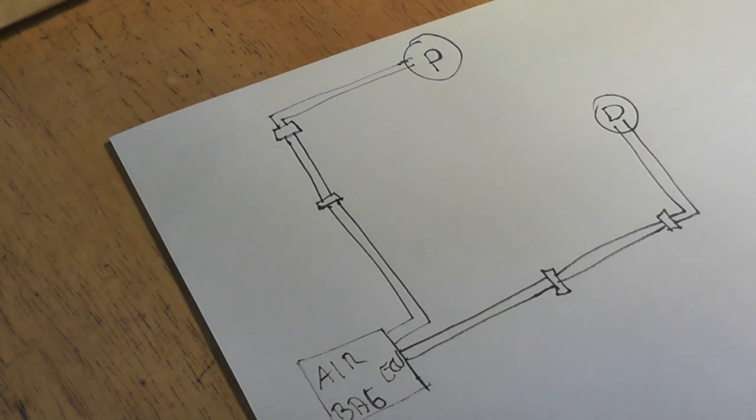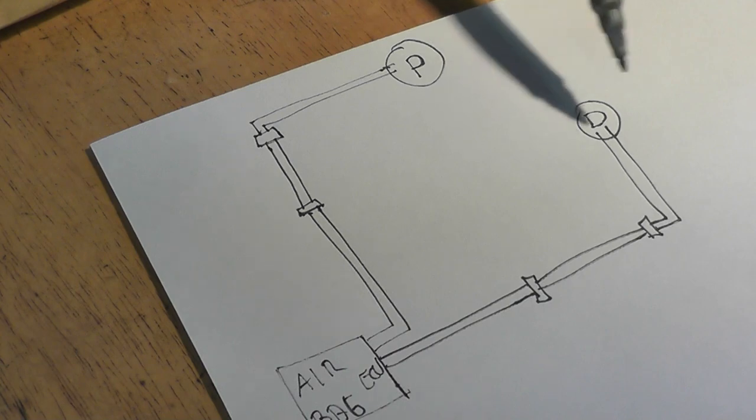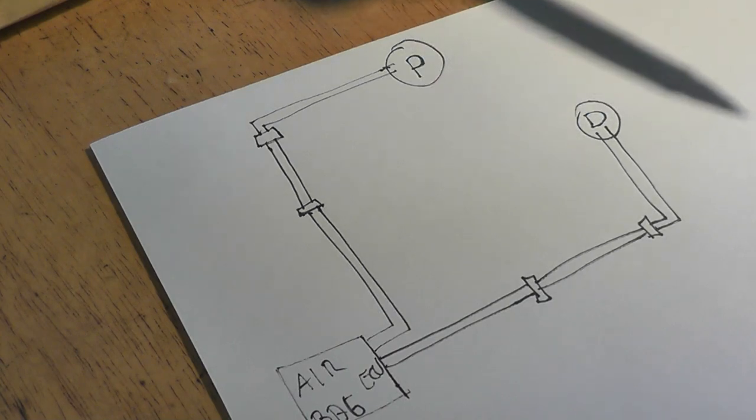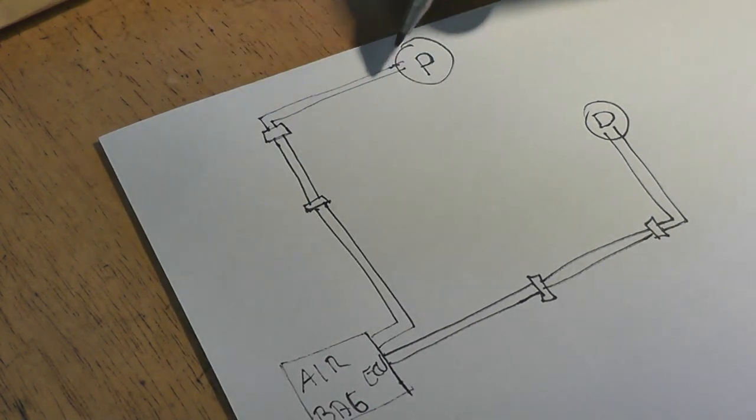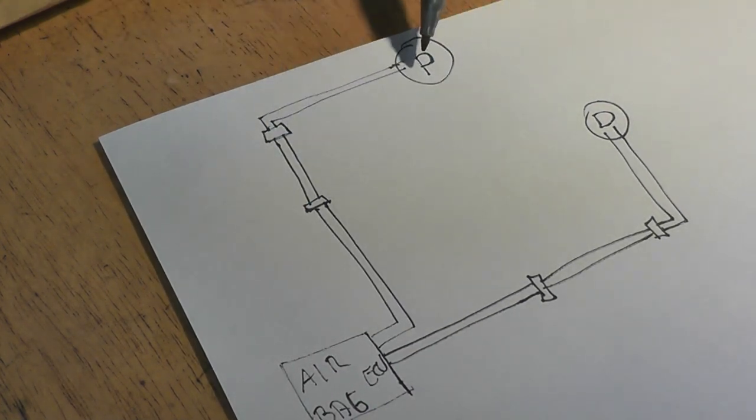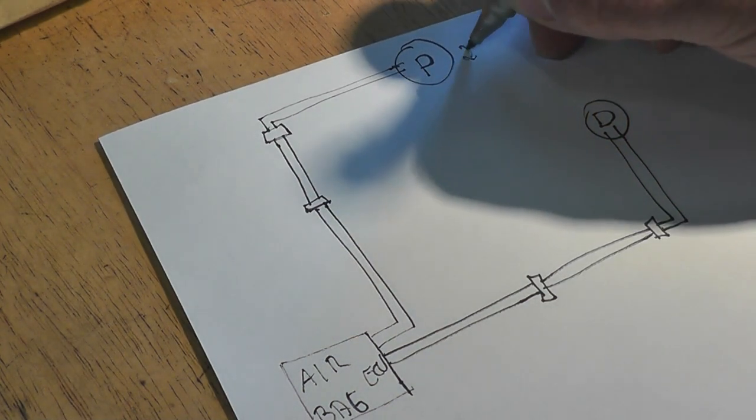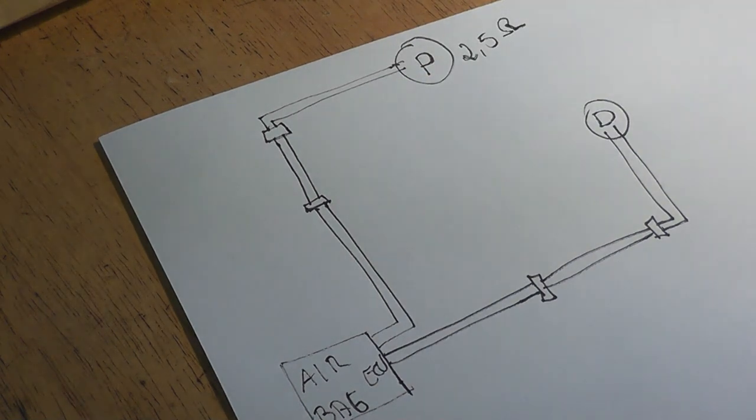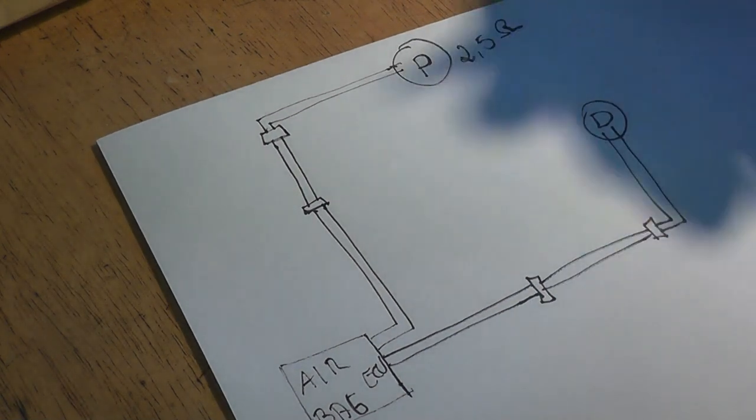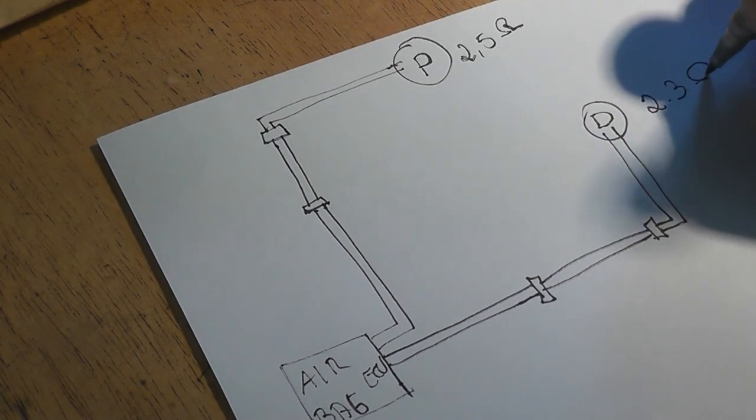Now the way ECU works or the way ECU tests these circuits when you turn the ignition on and then afterwards every couple seconds is the following. The ECU checks the resistance of each individual circuit. Now let's imagine for example this circuit is supposed to have 2.5 ohms, and this one here is supposed to have 2.3 ohms.